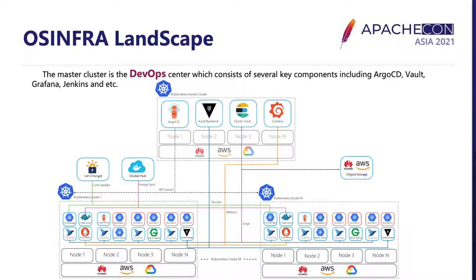As the diagram shows, we deployed a master Kubernetes cluster which plays as the brain of all our services. Within the integration of Argo CD, Vault, Elasticsearch, and Jenkins, we can fully manage the rest of the clusters and the applications. By the way, we are also planning to upgrade the master cluster into a full-stack solution for the Kubernetes platform in order to reduce the cost of platform management.